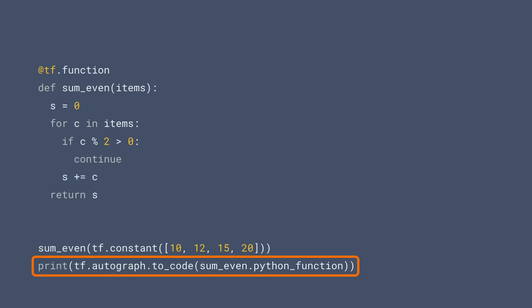This is complemented by autograph, which is built into tf.function. And it can convert regular Python control flow directly into TensorFlow control flow.